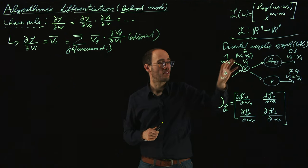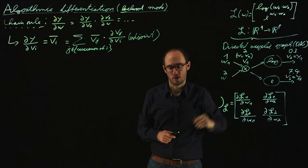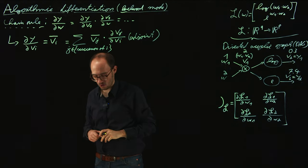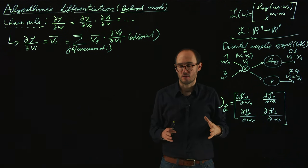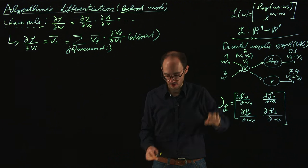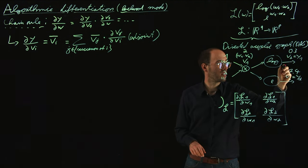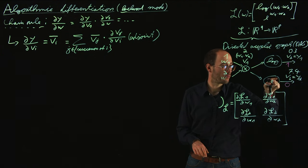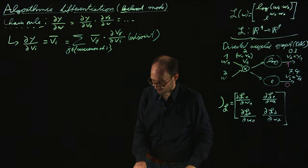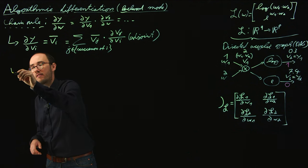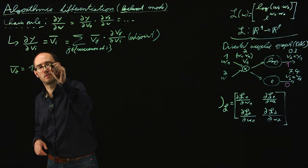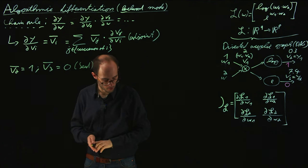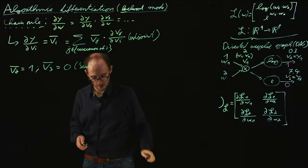We will utilize these adjoints in our computational graph to calculate the partial derivatives from backward to forward. Let's do that with our specific example sketched here. We also need a seeding, as we did in the forward mode, but now we seed with respect to the outputs. Our first seeding considers the first output v2 and sets the second output v3 to zero — so v2 bar equals 1 and v3 bar equals 0. This is our first seed for evaluation.